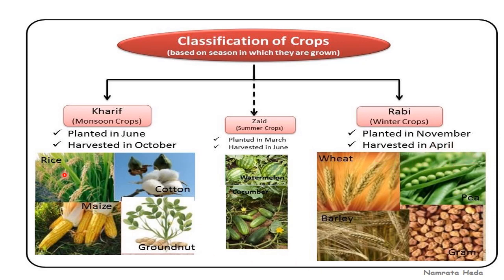Kharif crops include rice, maize, cotton, and groundnut. Zaid crops include watermelon and cucumber — mainly vegetables which grow in a very short period of time. Rabi crops include wheat, barley, peas, and gram.